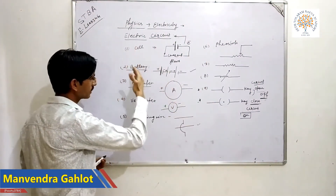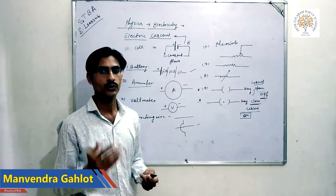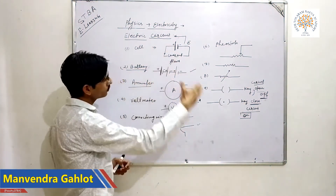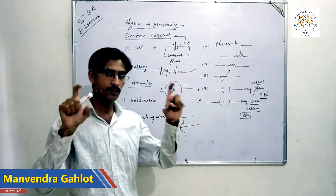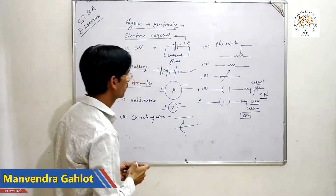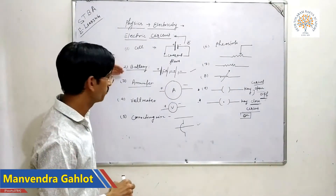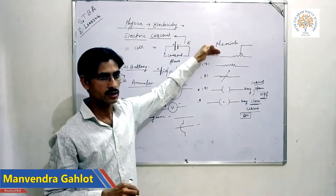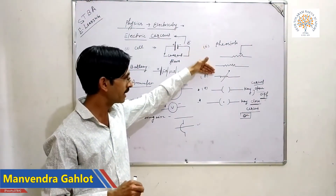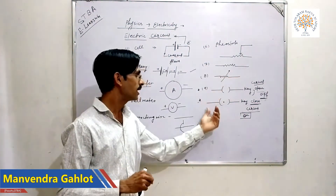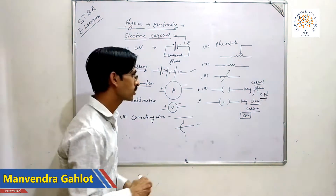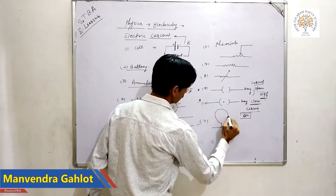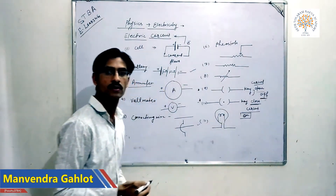These are the electrical appliances used in a household electric circuit. To summarize: cell, battery, ammeter, voltmeter, connecting wire, rheostat, resistance, variable resistance, switch or key — open and closed — and finally, electric bulb.